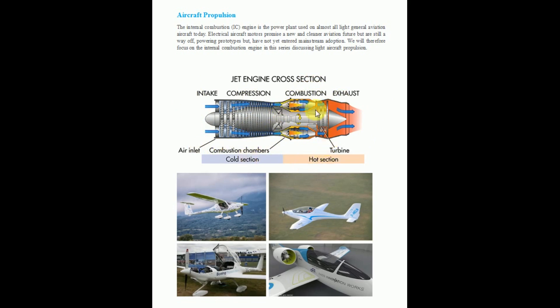The cold section and hot section are shown. The internal combustion engine as a power plant is used to run all light aircraft. Electrical aircraft motors represent a new, cleaner aviation but are not complete yet — only prototypes are developed nowadays. Therefore, the internal combustion engine is still the focus for light aircraft propulsion and can be applied to heavy engines as well.